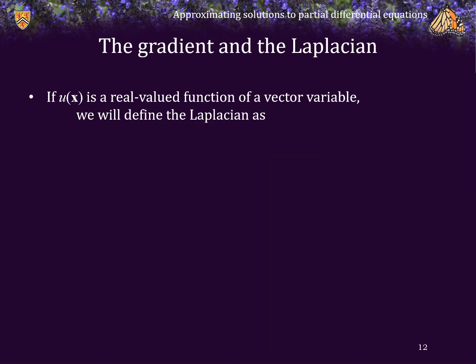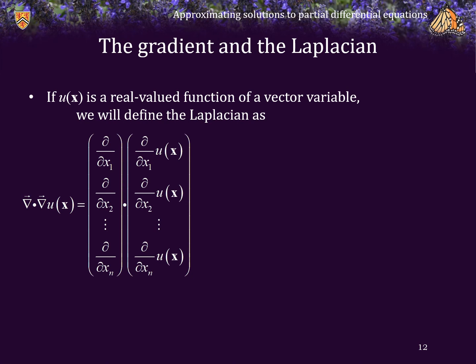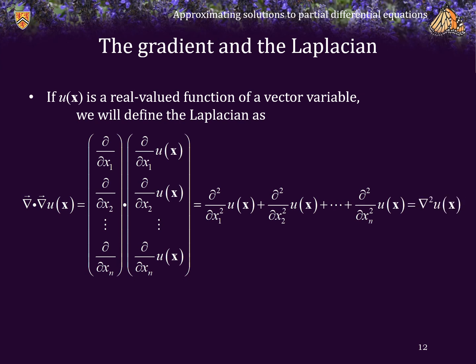If u(x) is a real-valued function of a vector variable, we define the Laplacian as follows: it is the inner product of the gradient operator with itself applied to u. This essentially sums the application of each component — the second partial operator in each variable — applied to u. The result is simply the sum of the second partial derivatives of the function u. We denote this as the gradient operator squared applied to u, and because the result is a scalar (not a vector), we leave off the arrow.